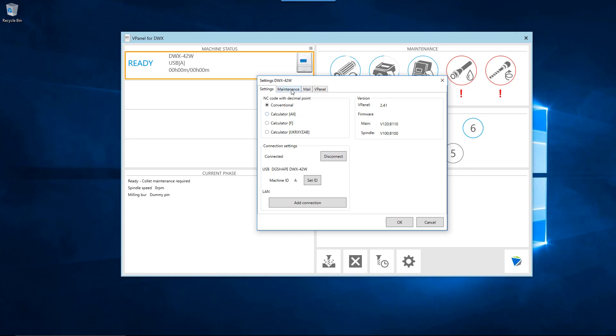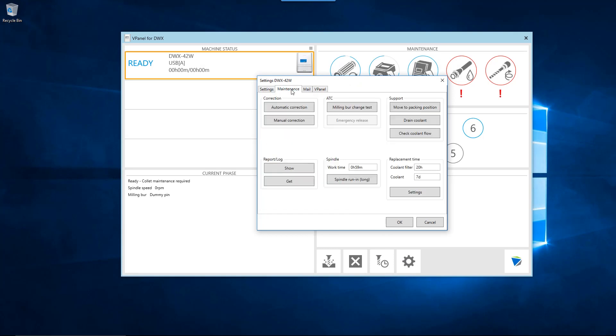Click on the Maintenance tab. Then, click on the automatic correction button in the corrections section of the Maintenance tab.